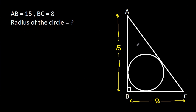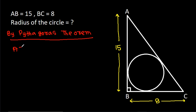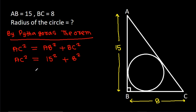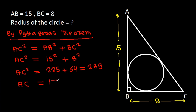And here, by the Pythagorean theorem, AC squared equals AB squared plus BC squared. So AC squared equals 15 squared plus 8 squared, which is 225 plus 64, that is 289. So AC squared is 289, meaning AC equals 17.